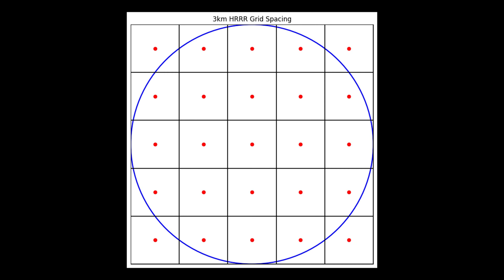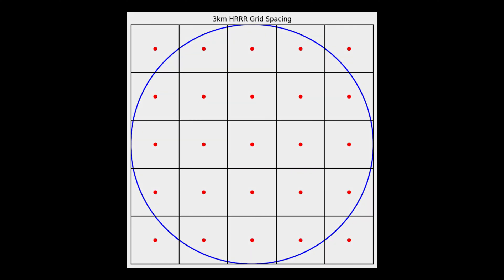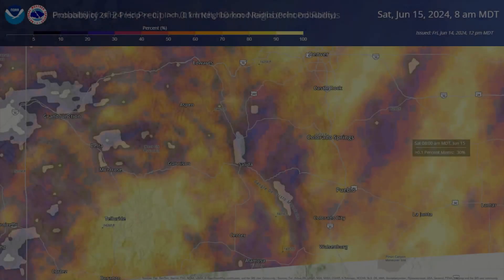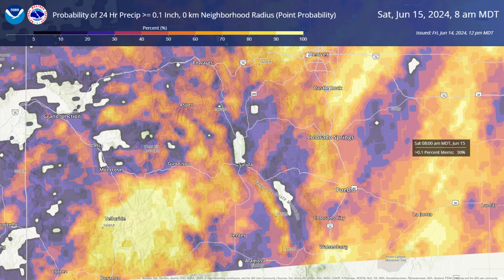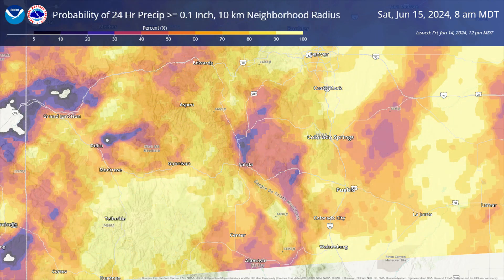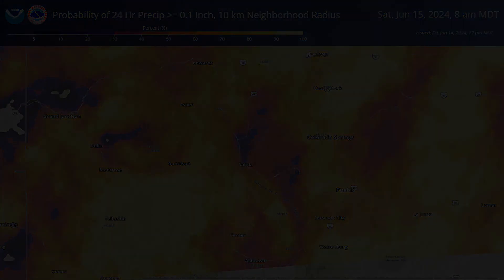This comes in handy for small-scale features like precipitation, because where ensemble members or ensemble systems have the placement of thunderstorms between the members is not exact. It also helps in areas of large terrain differences. Neighborhood probabilities allow you to assess the chance of the event occurring within that specific radius.